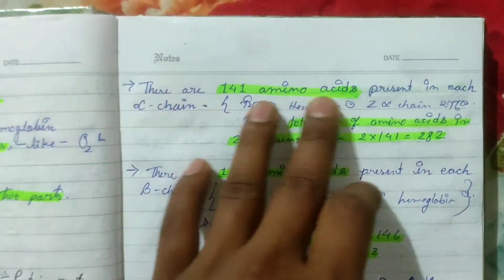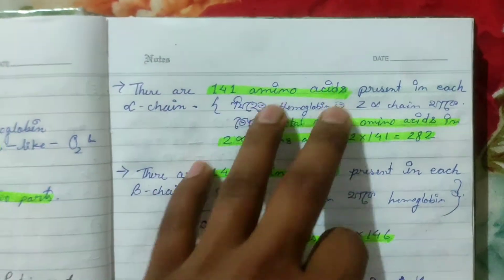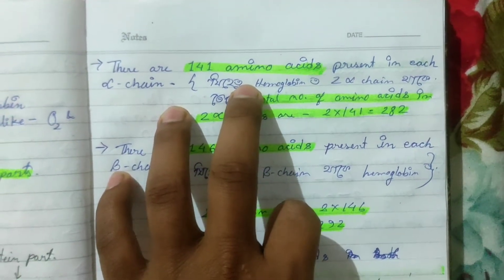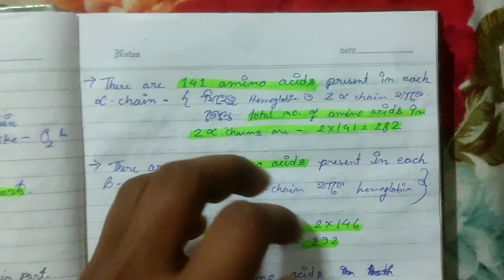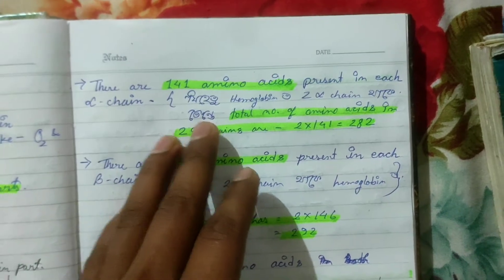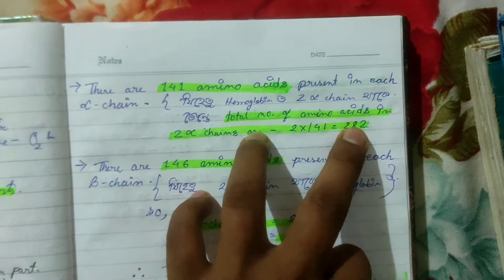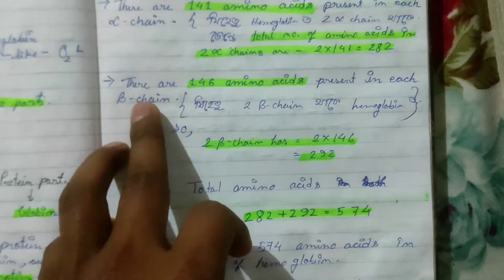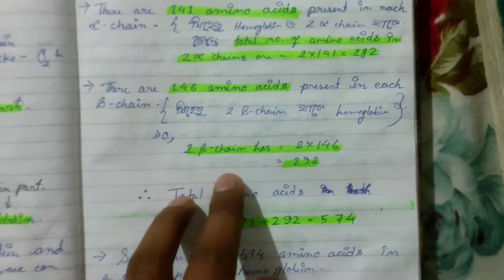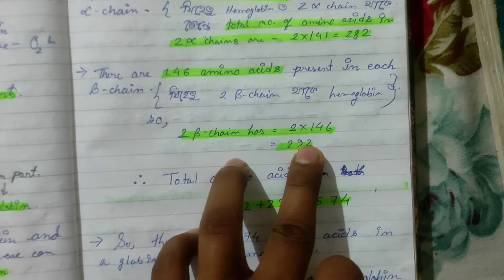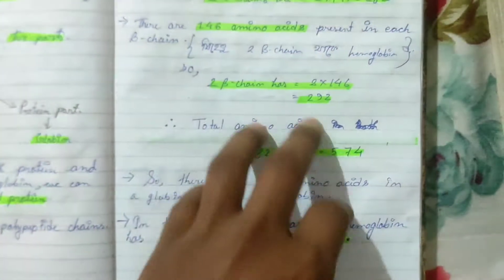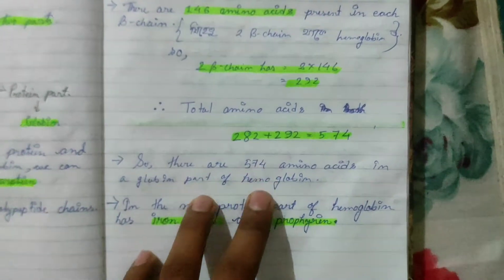The total number of amino acids in the alpha chains of the globin part is 282. So the total number of amino acids in the globin part of hemoglobin is 574.